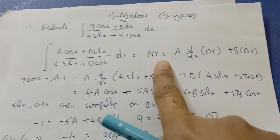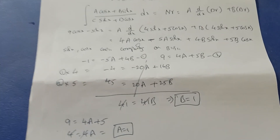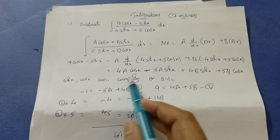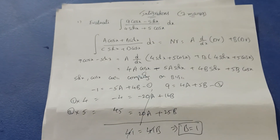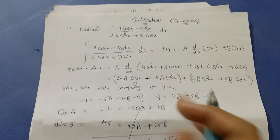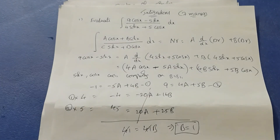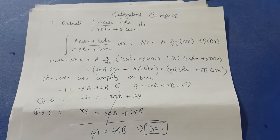Now apply the a and b values. The numerator 9·cosx minus sinx equals a times d/dx of denominator plus b times denominator. With a equals 1 and b equals 1, this becomes: one times (4·cosx minus 5·sinx) plus one times (4·sinx plus 5·cosx).